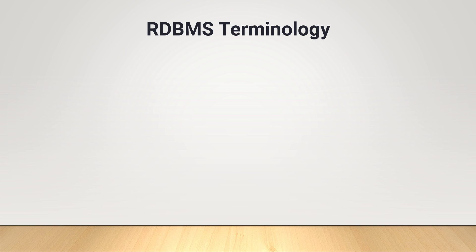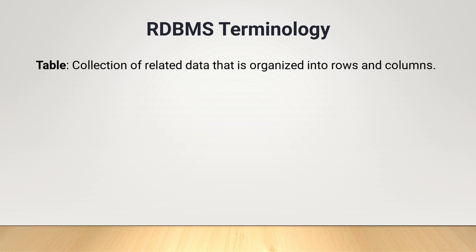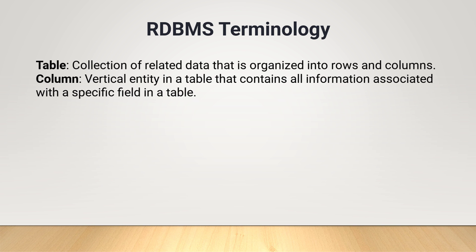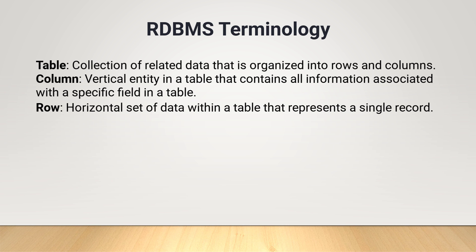RDBMS stores data in tables consisting of rows and columns and enforces relationships between these tables using keys. Let's briefly discuss RDBMS terminologies. Table: a table is a collection of related data that is organized into rows and columns. Each row represents a single record or tuple and each column represents a single attribute or field of the table. Column: a column or attribute or field is a vertical entity in a table that contains all information associated with a specific field. Row: a row or tuple or entry or record is a horizontal set of data within a table that represents a single record.